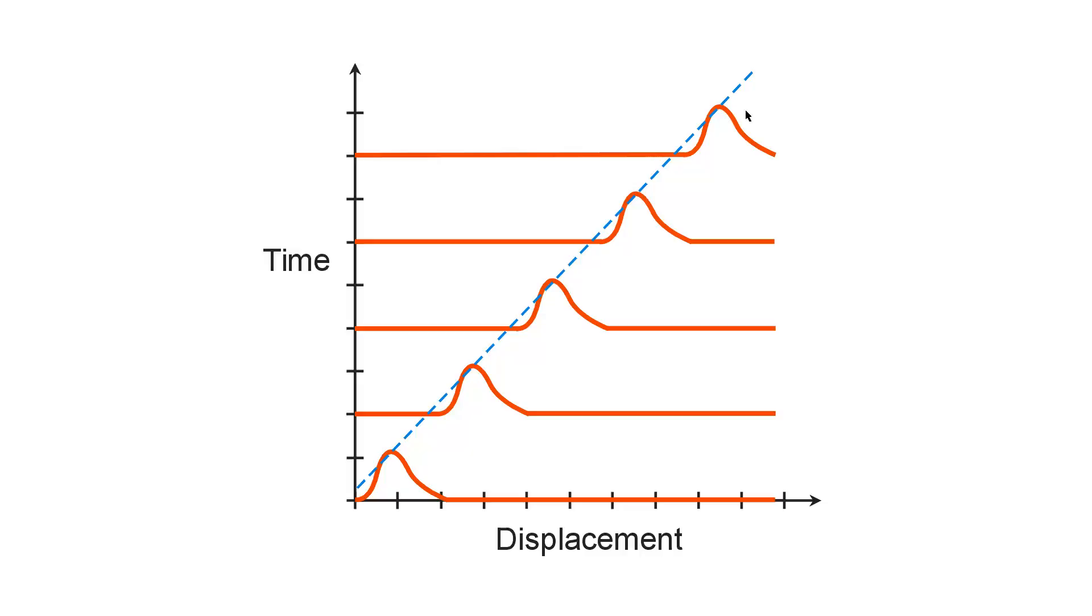You will see traveling down that rope a solitary wave or pulse. What happens to that wave if it encounters a barrier depends on the nature of the barrier and the wave. It may reflect back towards you or it may just disappear.